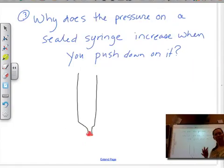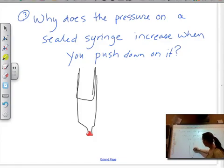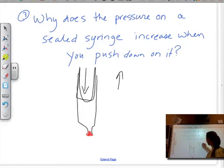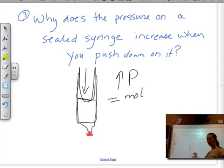Question number three: Why does the pressure on a sealed syringe increase when you push down on it? We're going to add in the plunger that pushes down. If we're pushing down, we're adding pressure. We're increasing the pressure on this specific volume. We're not changing anything about the number of particles, right? The number of moles is the same. So what are we changing about this container? The volume. The volume is decreasing.